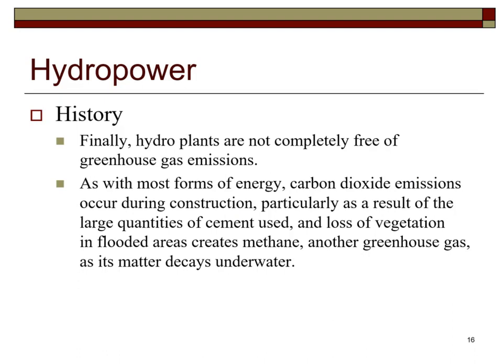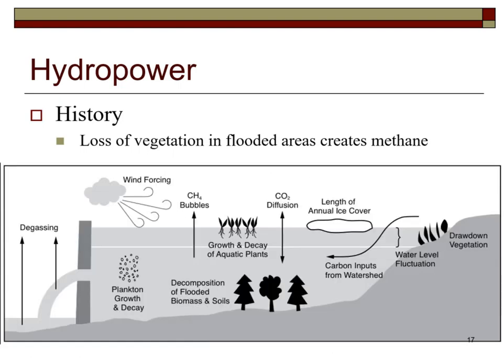Hydroplants are not completely free of greenhouse gas emissions. Carbon dioxide emissions occur during construction, particularly as a result of large quantities of cement used, and loss of vegetation in flooded areas creates methane—another greenhouse gas—as organic matter decays underwater. Methane has a greater global warming potential than carbon dioxide.